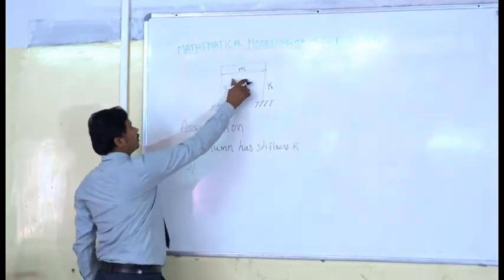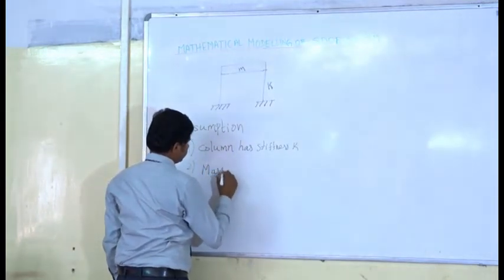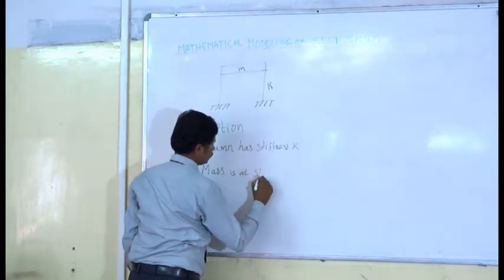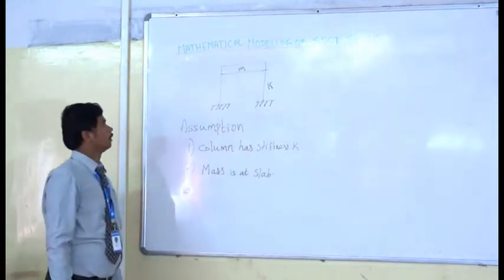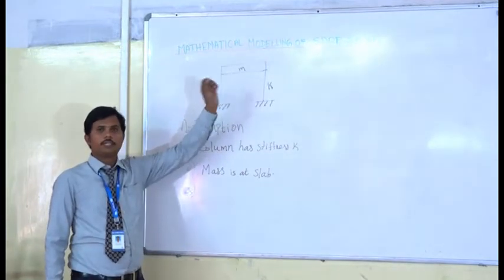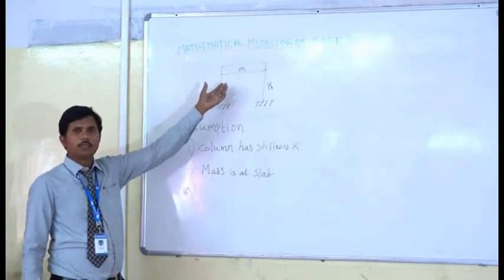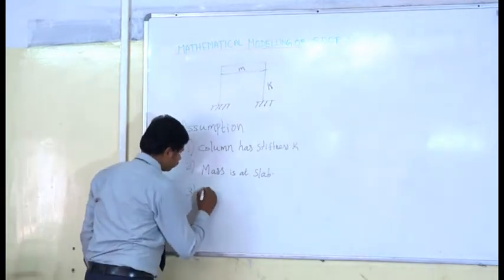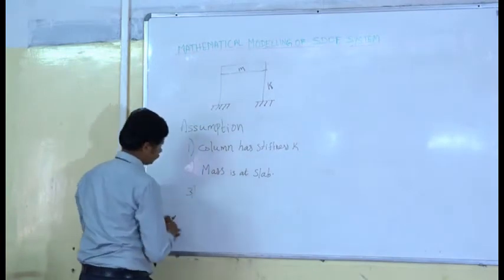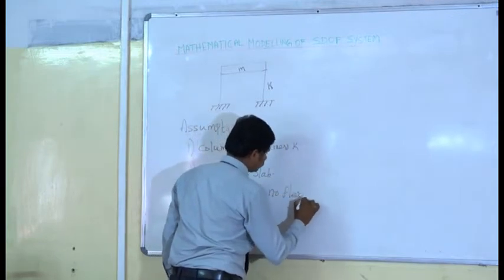The mass is acting as slab. The column is infinitely rigid, so it has no flexibility. It is fully rigid, so automatically it has no flexibility.